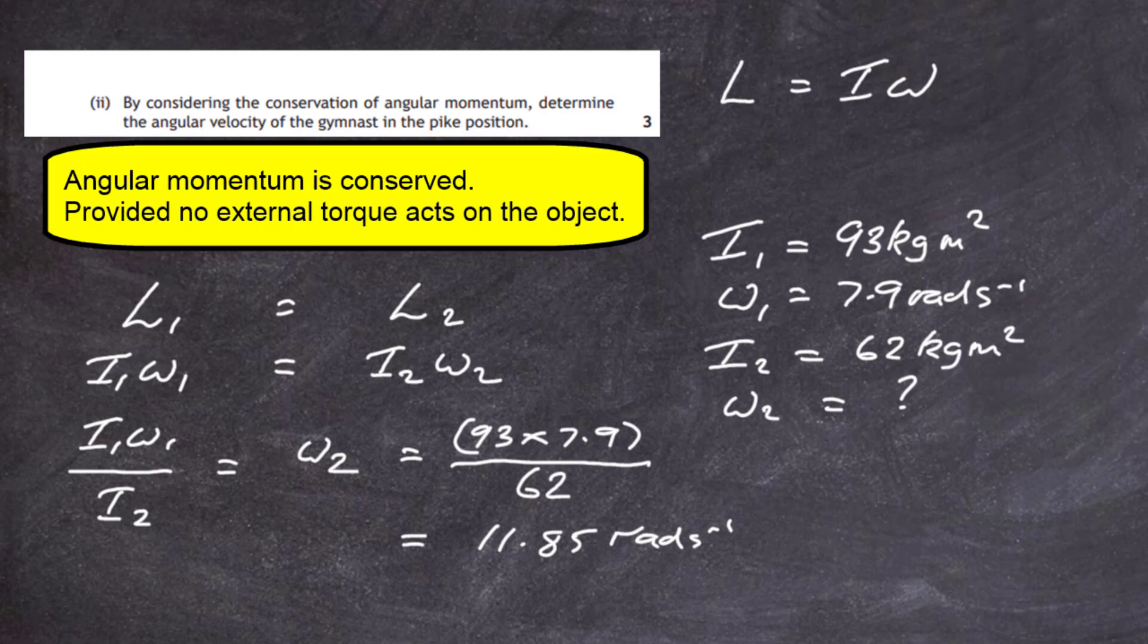We're dealing with two significant figures throughout. It's best to put that answer into two significant figures. So we'll say it's 12 radians per second. That's your answer.